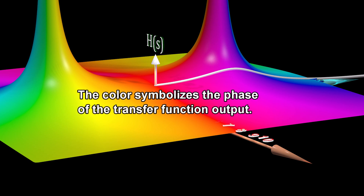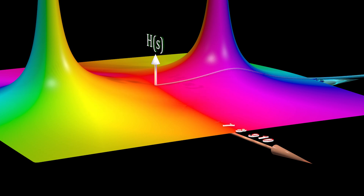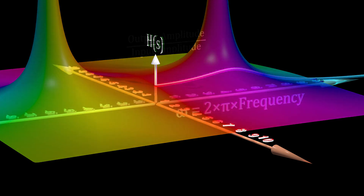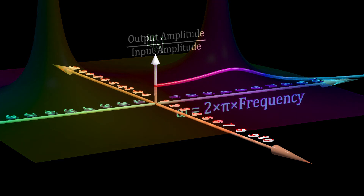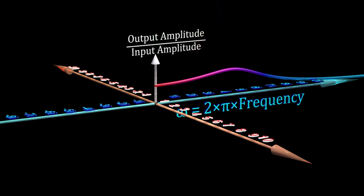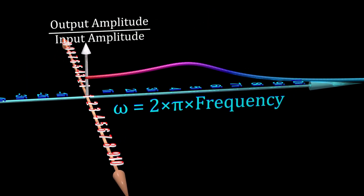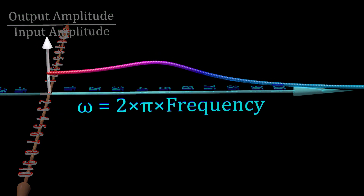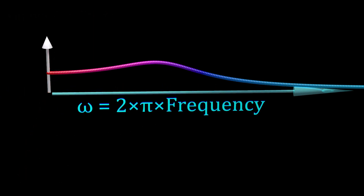The color symbolizes the phase of the transfer function output. Let's change the color of each point to match the corresponding color of the transfer function at that location. We can use these colors to graph the difference between the output phase and the input phase.